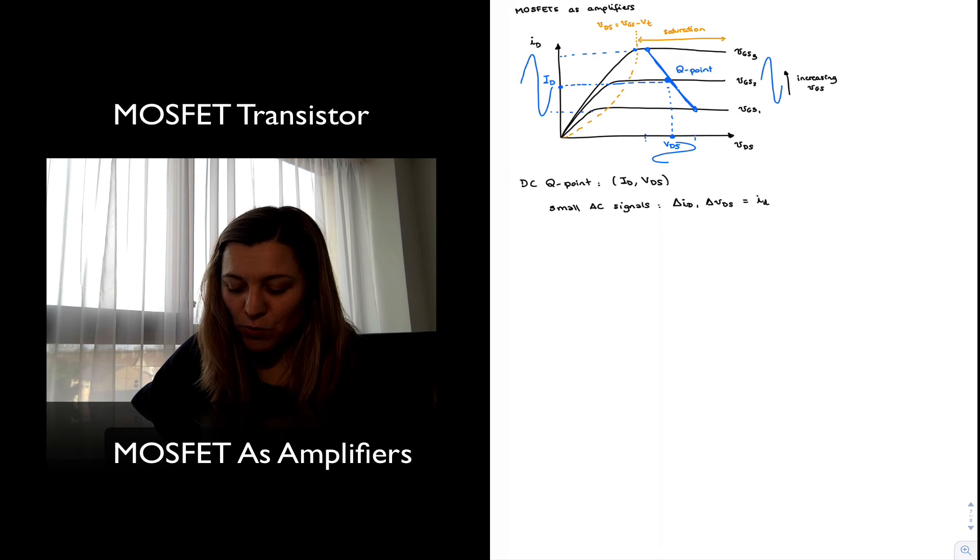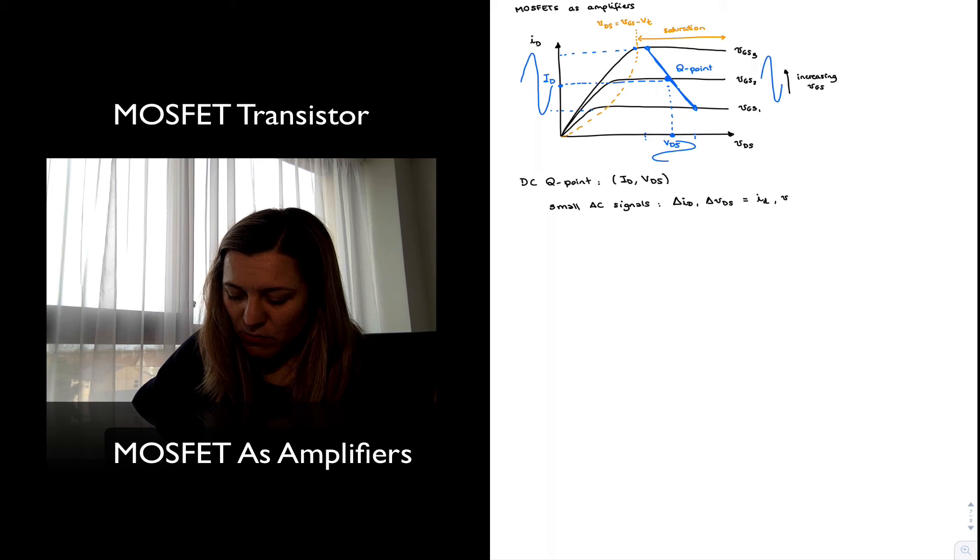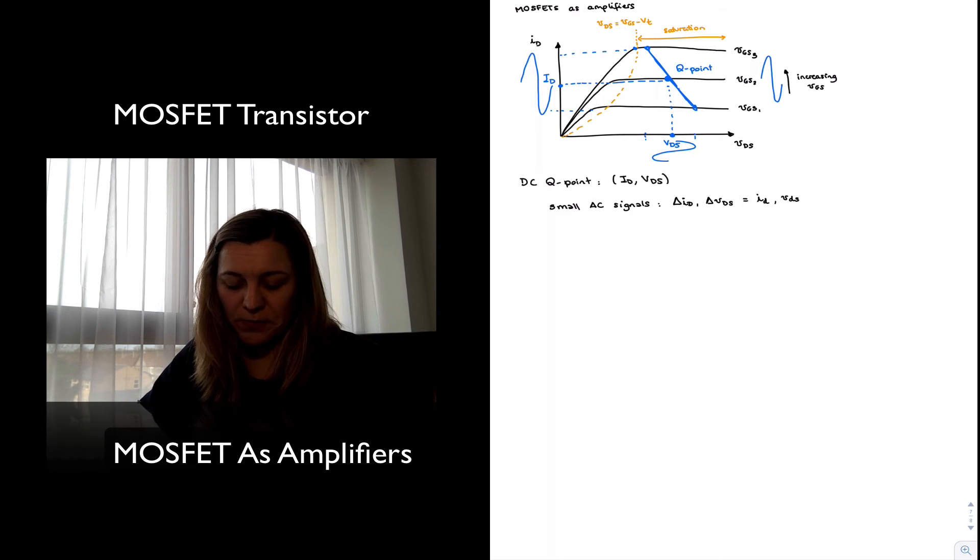So when I refer to small lowercase i, lowercase d, this is going to represent just a small signal variation of the current about the quiescent point. Same thing with VDS. I will represent it as this. Whereas my DC quantities are going to be capital letter capital subscript.